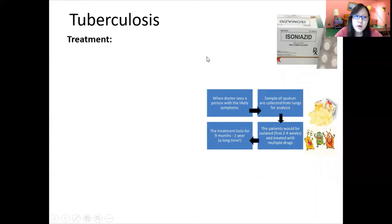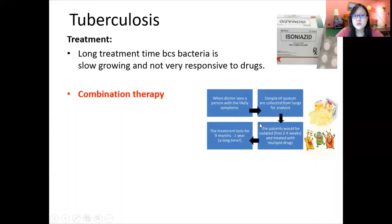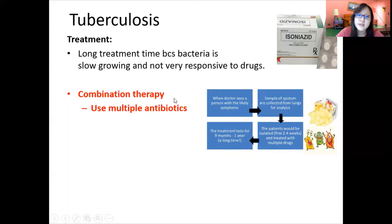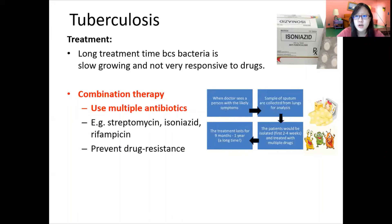If you test positive, what happens? Because the bacteria is very slow-growing and not very responsive to drugs, treatment takes a very long time — around 9 months to 1 year — and patients must be isolated and treated with multiple drugs. This is called combination therapy. Because tuberculosis is a bacterial infection, we use antibiotics — multiple antibiotics such as streptomycin, isoniazid, and rifampicin. Using multiple antibiotics prevents drug resistance from developing.